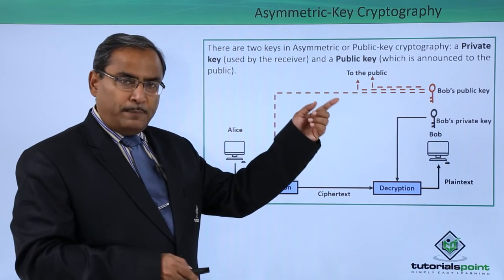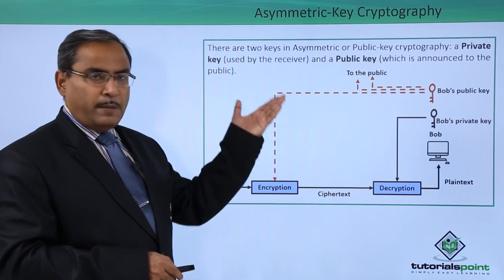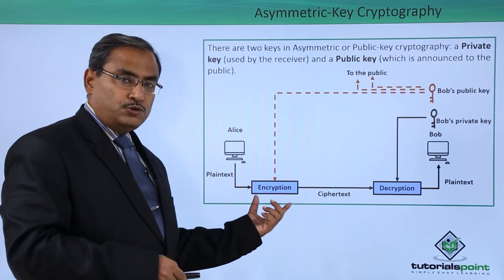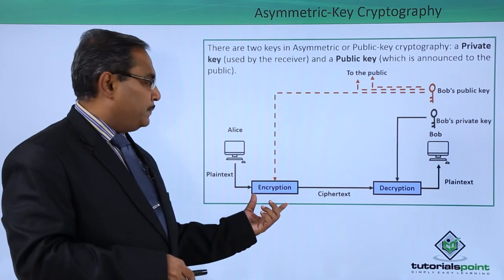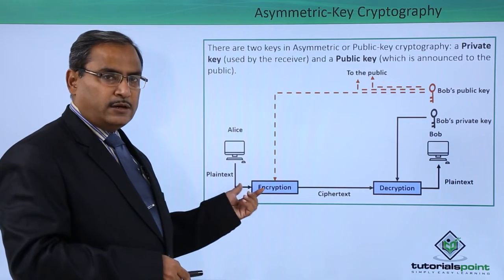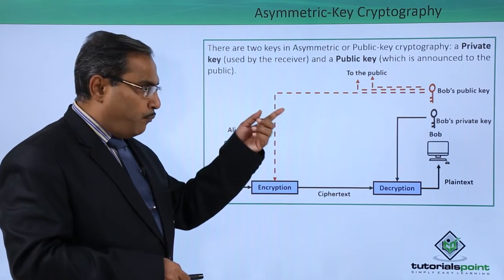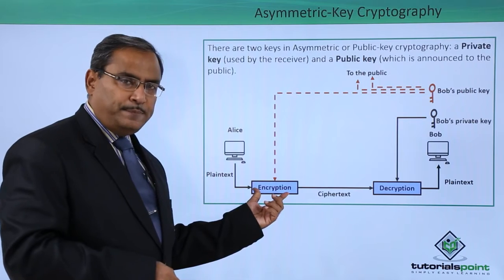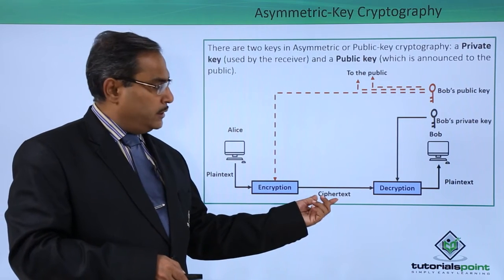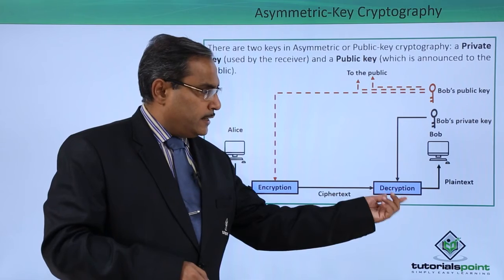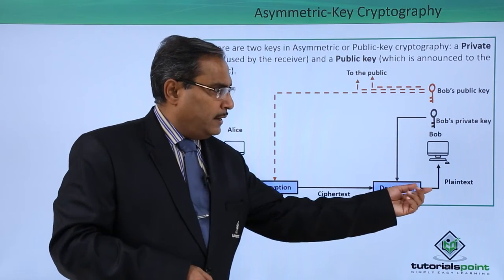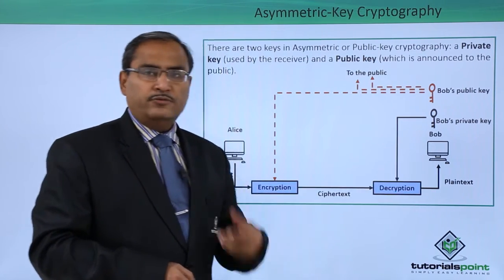Using Bob's public key, which is known to the public, encryption is performed. Alice, as the sender, encrypts the plain text using Bob's public key to produce cipher text. The cipher text is then decrypted using Bob's private key, and the plain text is re-originated.